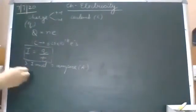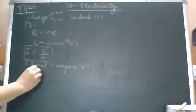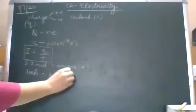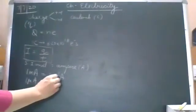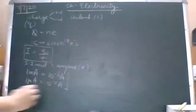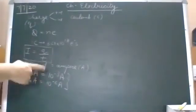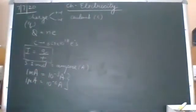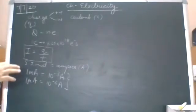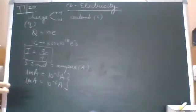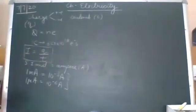I had also mentioned that there are two other units of current we use: milliampere, which is 10^-3 ampere, and one microampere, which is 10^-6 ampere. These are smaller units of current and we also use them in lab calculations. So you have to be familiar with these units as well. The numericals we did should be there with you in your notebooks.